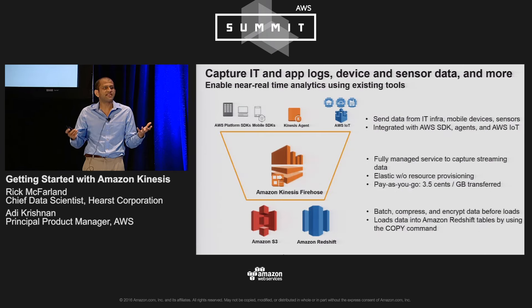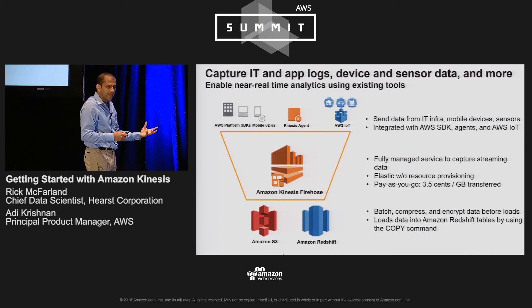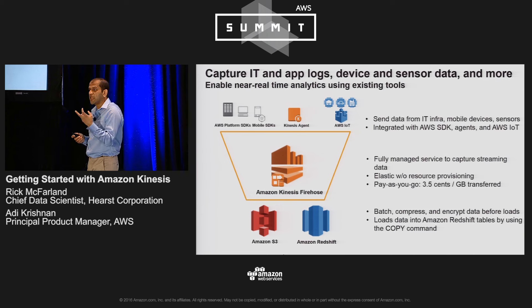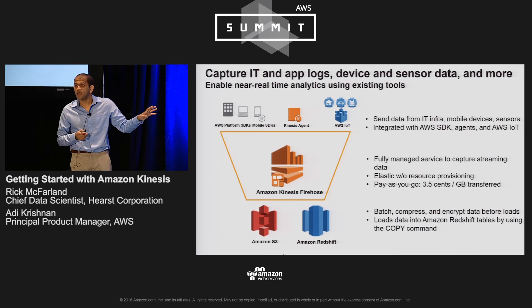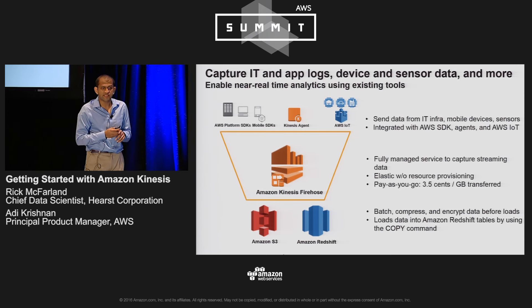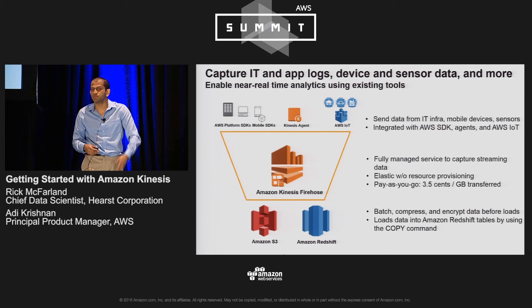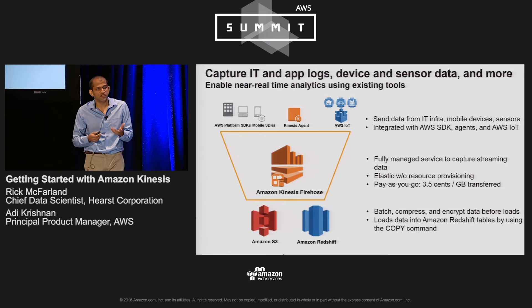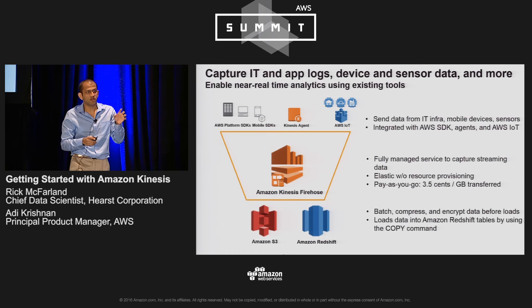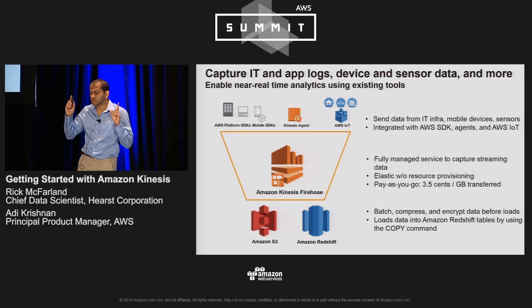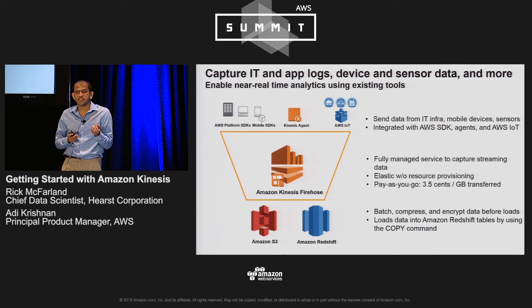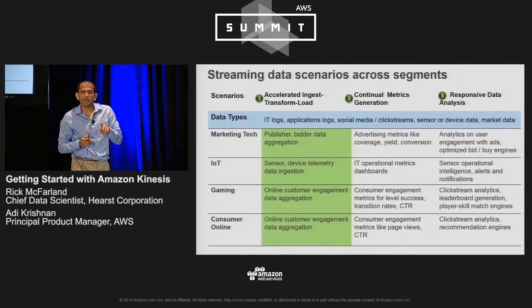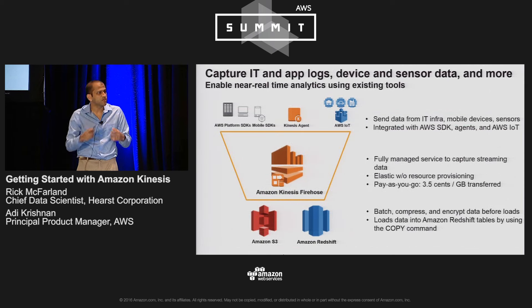Much like Kinesis Streams, there are a variety of ways to put data into Firehose. All our AWS SDKs support Firehose APIs. We've got an agent that you can install — it's available in all Amazon Linux images of base EC2 instances — and you can start sending data from your front-end fleet or a proxy fleet into Kinesis Firehose today. It has features like transformations to flatten JSON or convert into JSON, which makes loads into Redshift easier. It's a fully managed, completely elastic service, and the cost is $0.035 per gigabyte of data transferred into that destination.